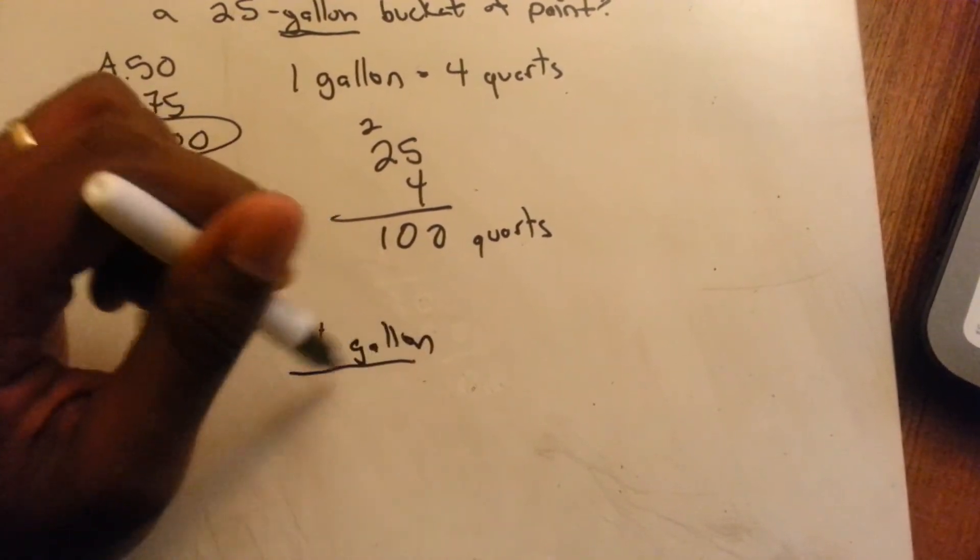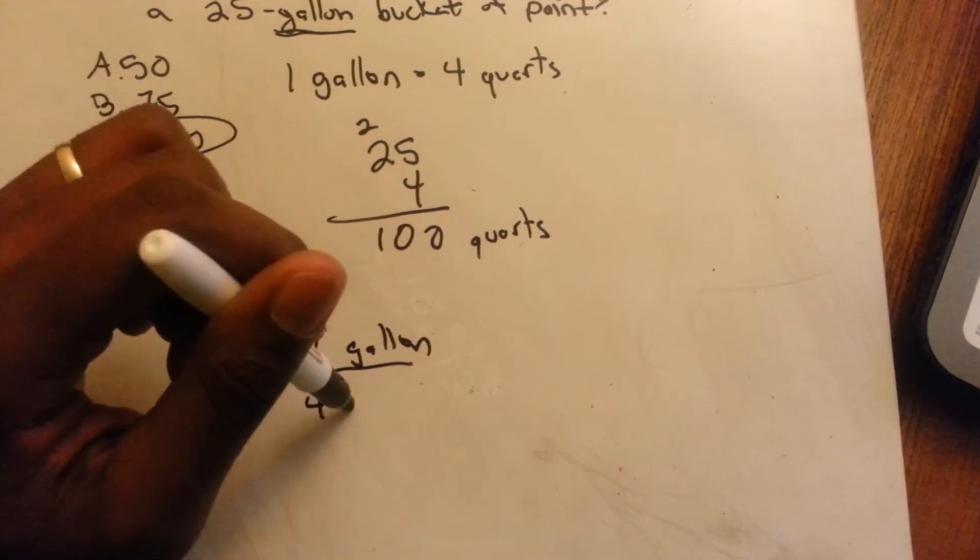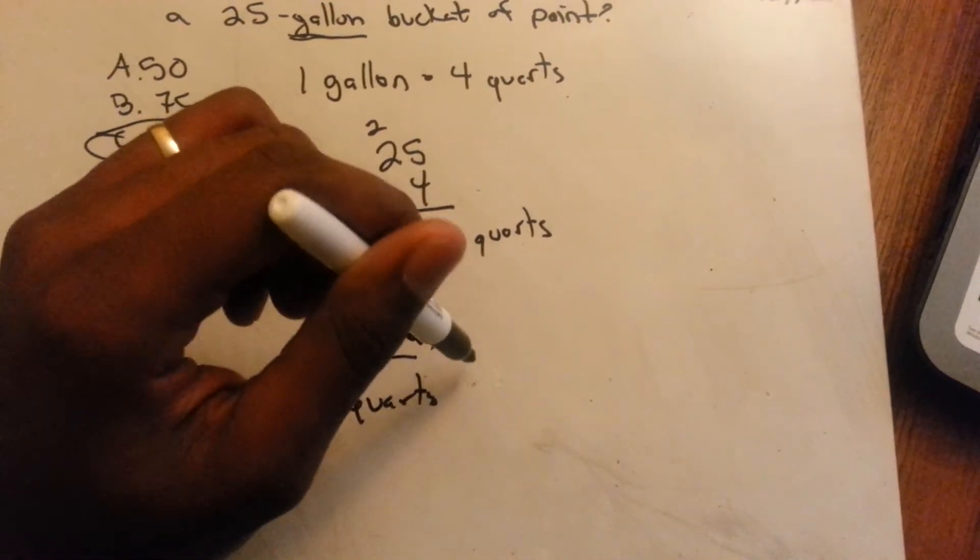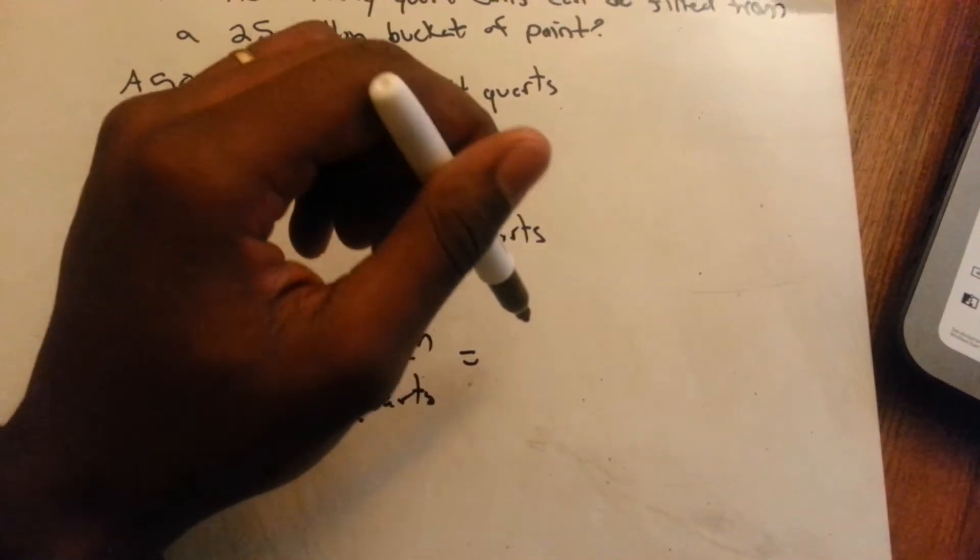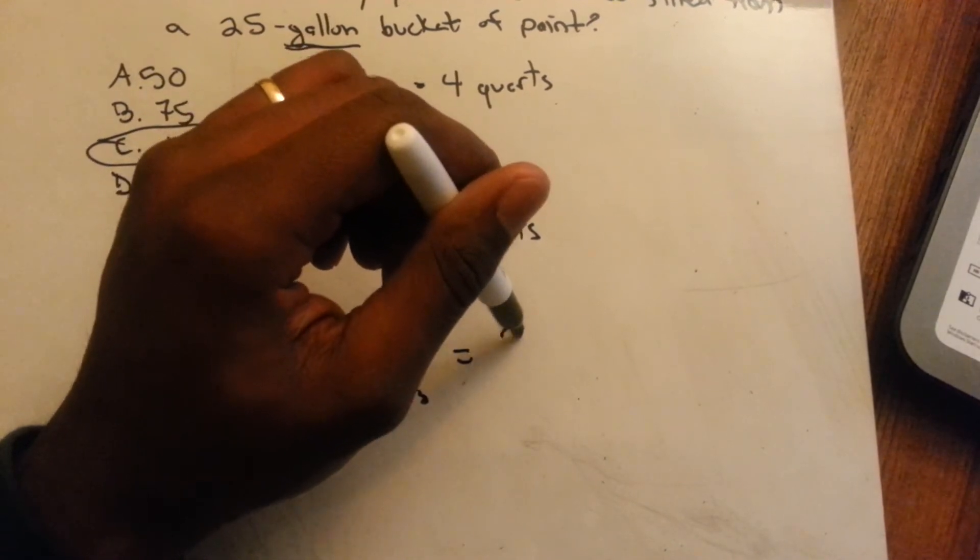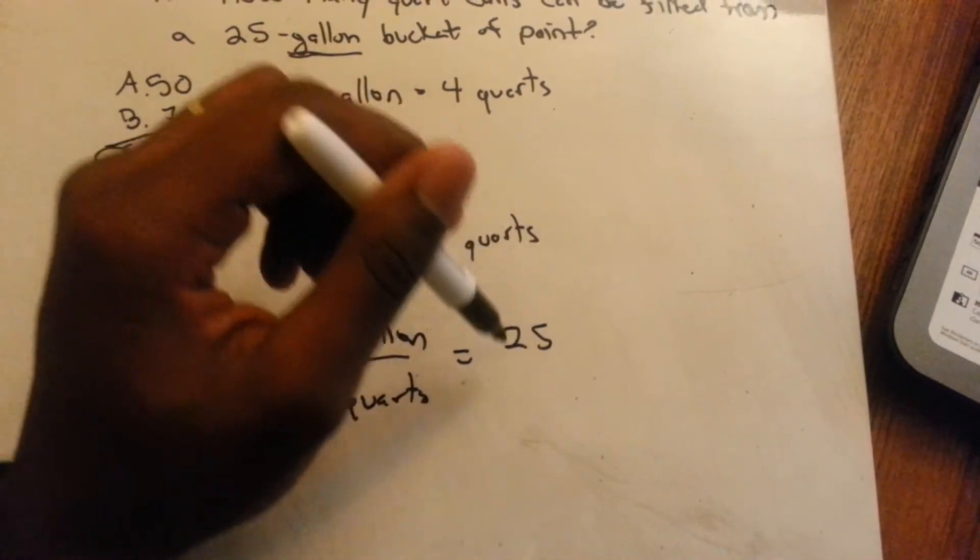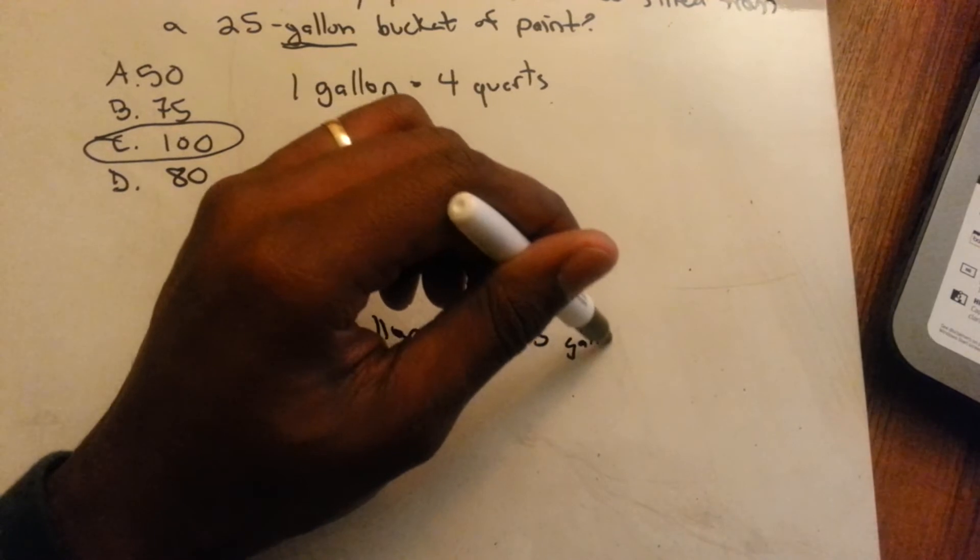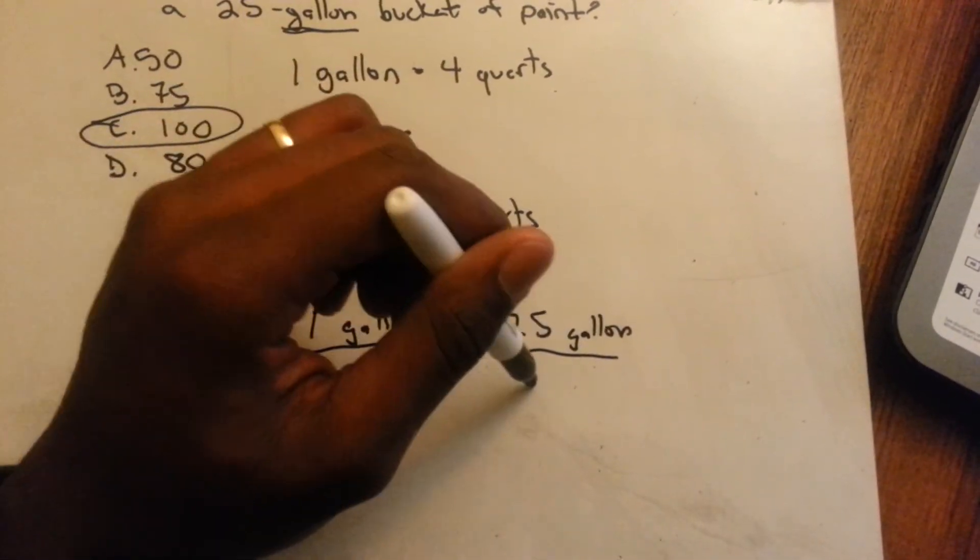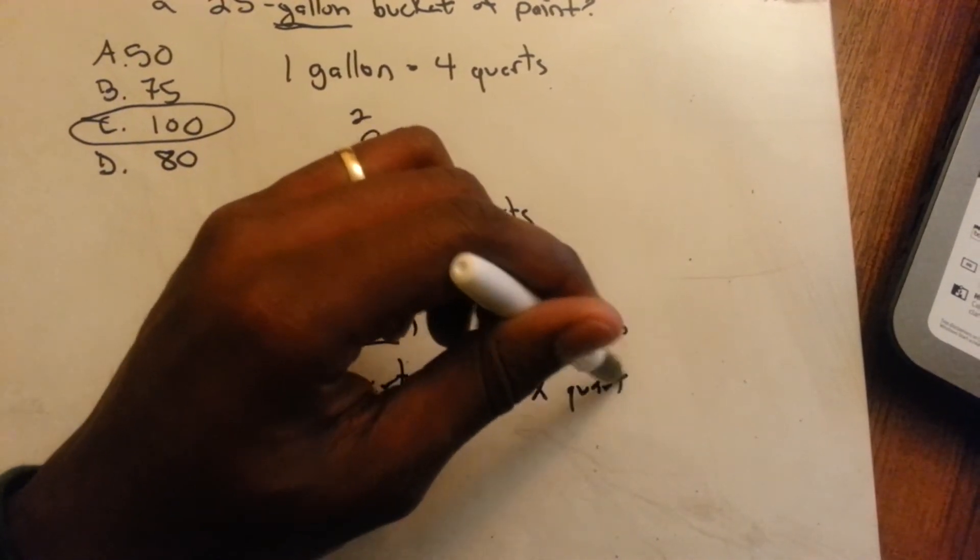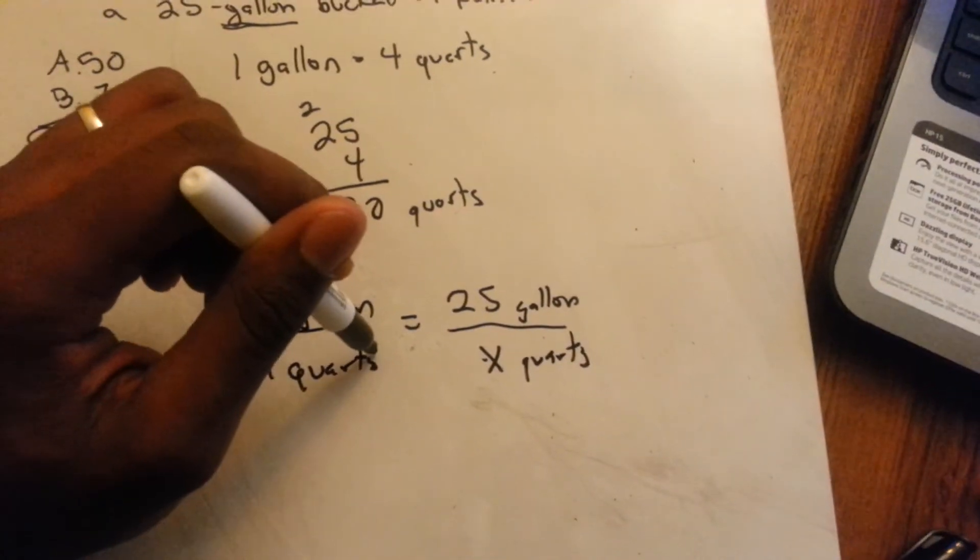So the ratio would be 25 gallons equals x quarts. Then you cross multiply.